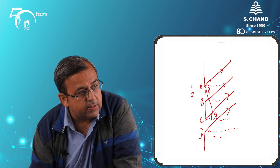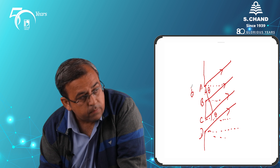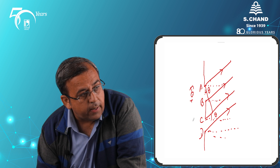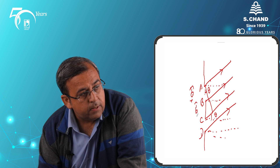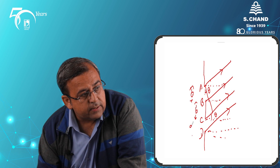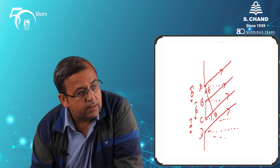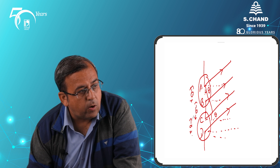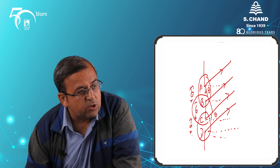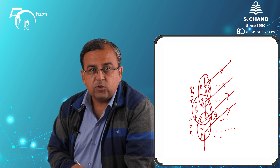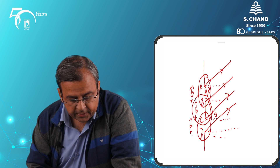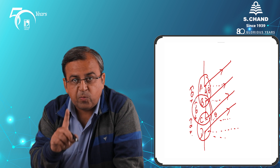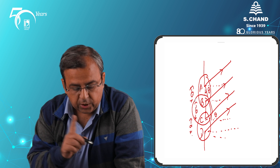AB is small a, this is small b, which we have seen in the previous slide as well. And CD is again small a — that is the width. So AB and CD are the two slits each of width small a, and BC is the opaque part of width small b. Now we are trying to understand the interference maxima and minima which we will be observing.